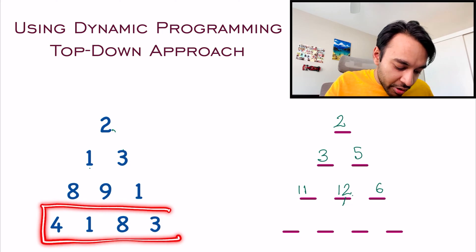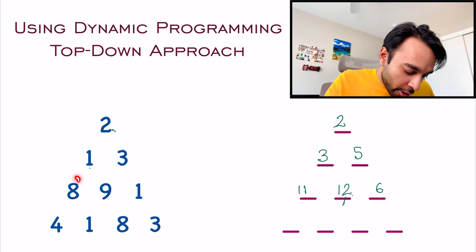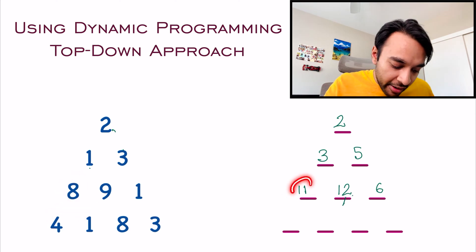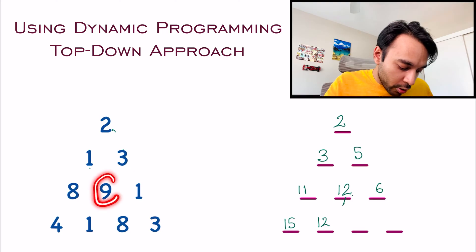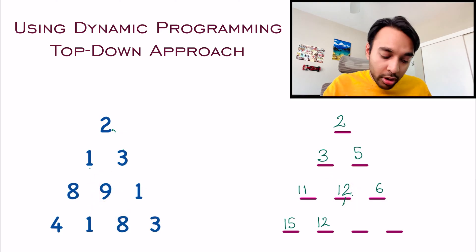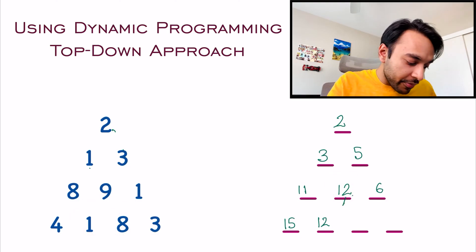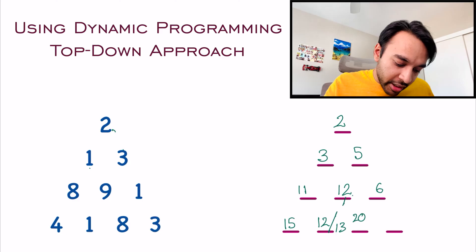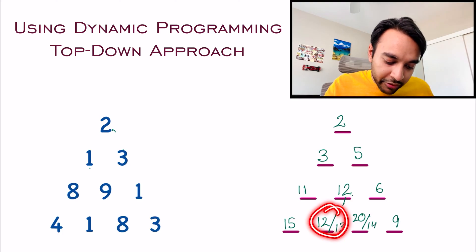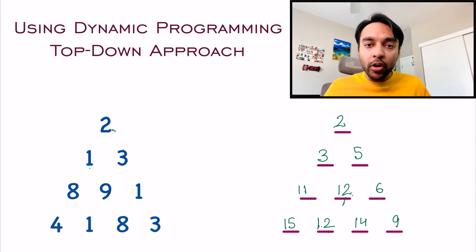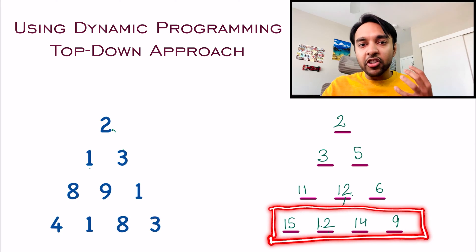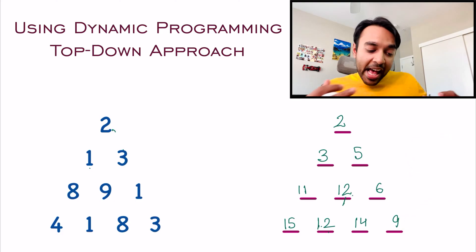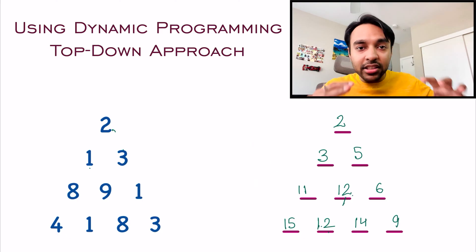Expanding to the fourth level: from 8 we can add 4 or 1, so to 11 we add 1 getting 12. From 9 we add 1 or 8, so to 12 we add 1 getting 13 or 8 getting 20. From 1 we add 8 or 3, so to 6 we get 14 or 9 — we pick the smaller value, 9. For a triangle of height 4, 9 is your answer. This is how we apply the dynamic programming technique going from top all the way down — this is the top-down technique.